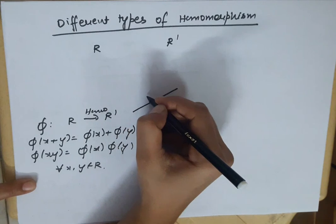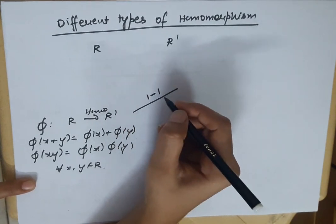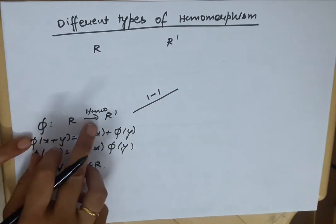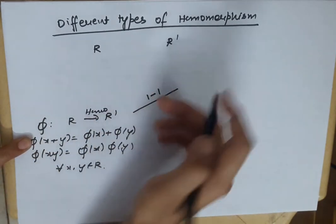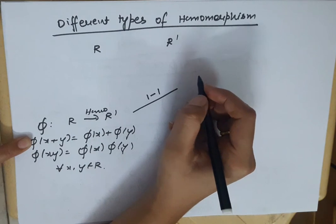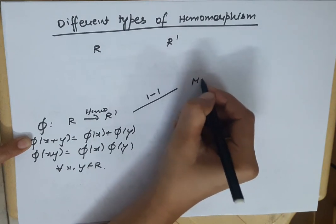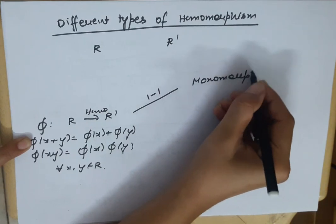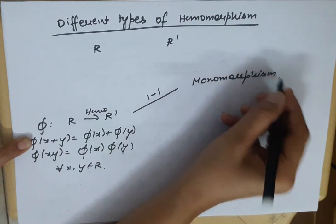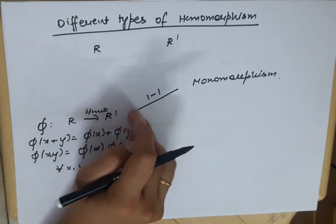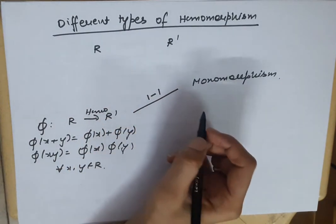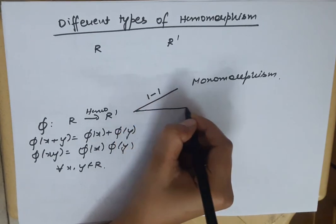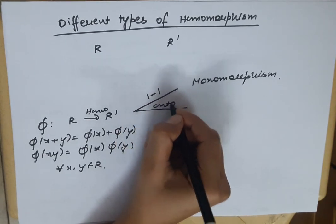If we add the condition that this mapping is one-to-one, that means with this homomorphism, if it is 1-1, then we call this mapping a monomorphism. So if there is a homomorphism and it is 1-1, we call it monomorphism.